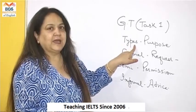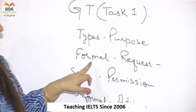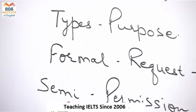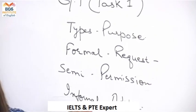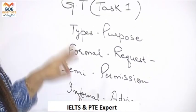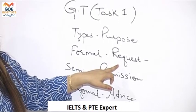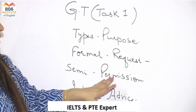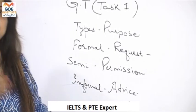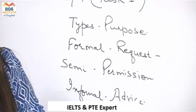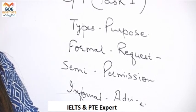You should know the types. Types of letters: a letter can be formal, semi-formal, or informal. In a formal letter you generally write a letter of request. In semi-formal you may be asking for permission, and in informal you may be giving advice or writing to a friend, family member, or relative.